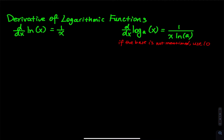The less popular one is the common logarithm — log versus ln. For log base a of x, the derivative is 1 divided by x times ln(a). If the base is not mentioned, the implied base is 10 by default. So if they ask for the derivative of log(x), you use base 10.